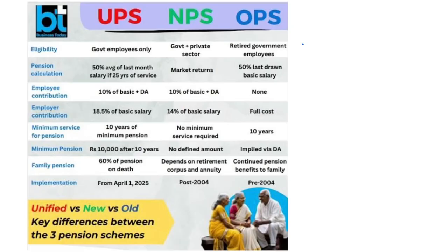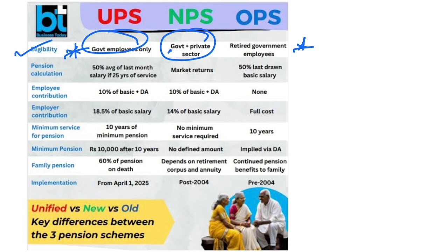Understanding the difference between UPS, NPS, and OPS is the most important point. The eligibility difference is: the Unified Pension Scheme is for government employees only — it is not applicable for private employees. But NPS is applicable for both the government and private sector.